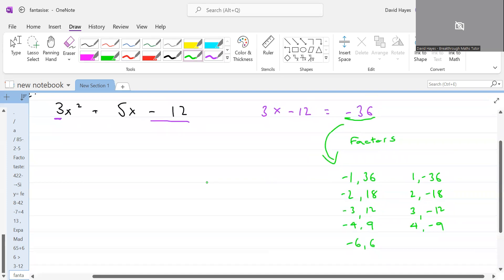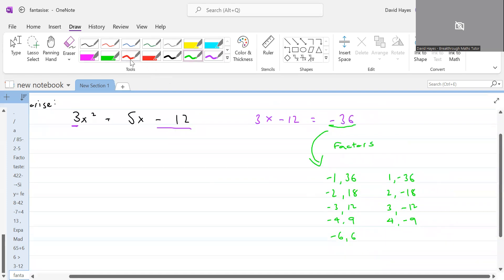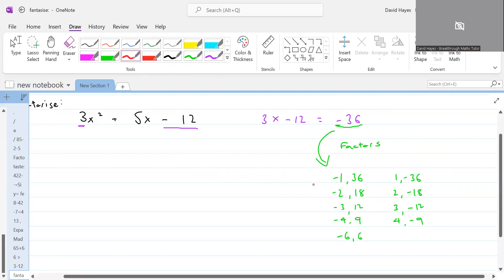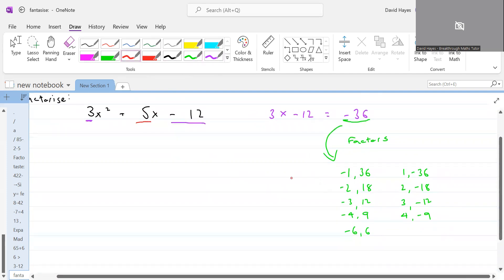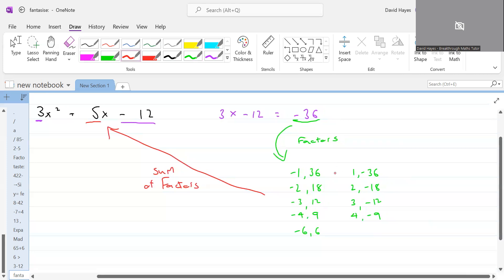And now our next step is very important. We need to pick one of these sets of factors, and how we do it is we pick the one that would add to give the number in front of the x term. So we want the sum of factors to give that. What I mean by sum of factors is minus 1 plus 36 would give me 35, that's not 5, that's not an option.